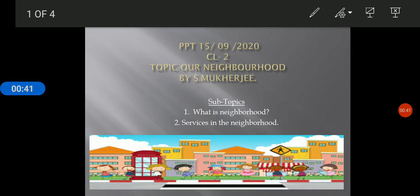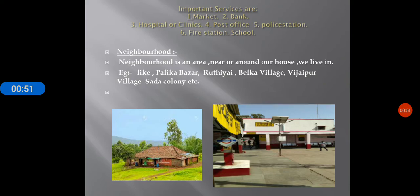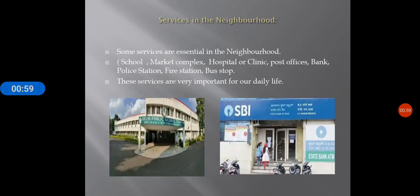See, in the first picture here, this is a picture of our neighborhood. Now, what services are required in a good neighborhood? Services like school, market complex, hospital or clinic, post offices, banks, police station, fire station, and bus stop. These are the important and very essential services, and they are also a feature of a good neighborhood.